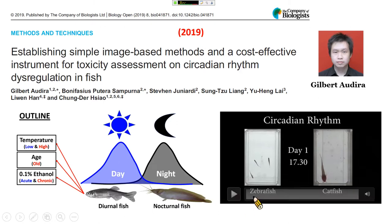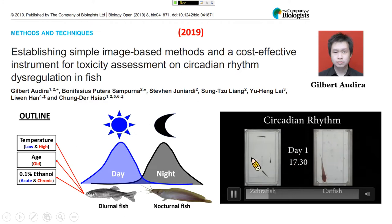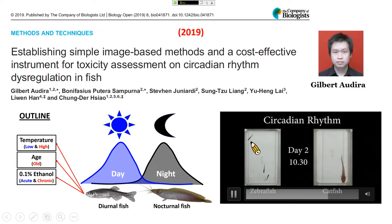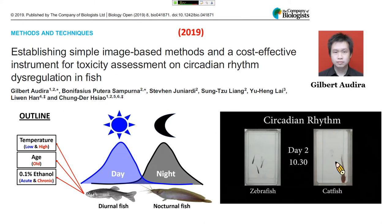This video shows you the circadian rhythm for zebrafish. You can see in the daytime the zebrafish is quite active, but the catfish is sleeping. After the night cycle, when we turn on the infrared, you can see the catfish becomes quite active, but the zebrafish behaves like it is sleeping. Then another day, the zebrafish is active again but the catfish is sleeping again — showing that these two fish have fundamentally different circadian rhythms.